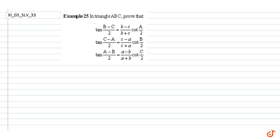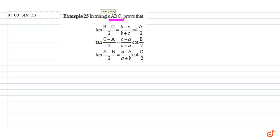In this question, in a triangle ABC, prove that tan((B minus C) by 2) equals (B minus C) upon (B plus C) into cot(A by 2). Similarly, we have to prove the other two combinations also.